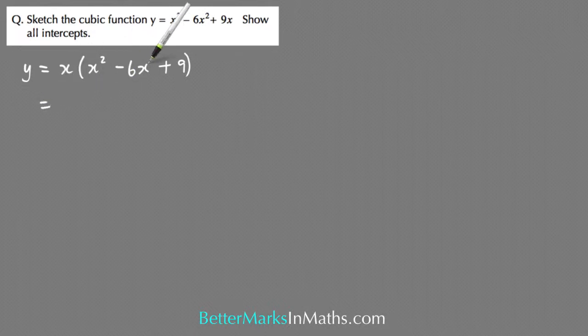And then this can actually be factorized to x minus 3 squared. When this is a plus and this is a minus and this number here, the square root of it, when you double that square root and get this number here, it means that whole thing can be factorized to something in a bracket squared, and it's called a perfect square.